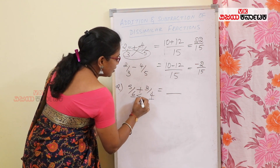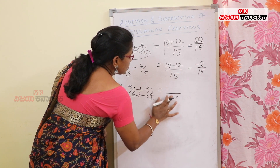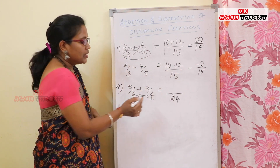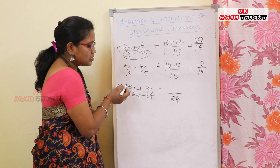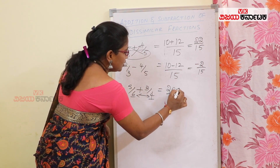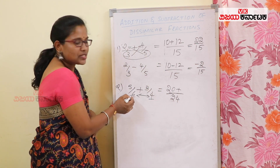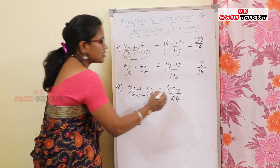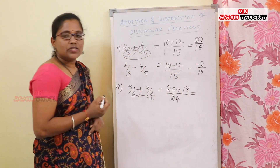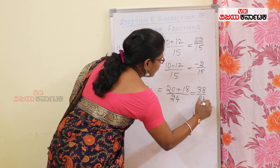This is equal to — for the denominator, 6 into 4 is 24. For the first fraction, multiply the numerator: 5 fours are 20. Then for the second, 3 into 6 is 18. So adding them gives 38 by 24.